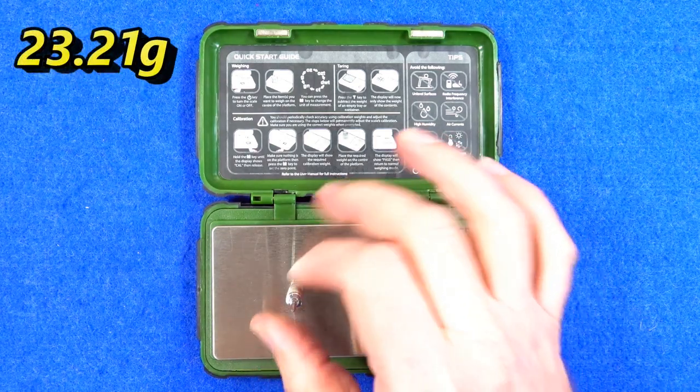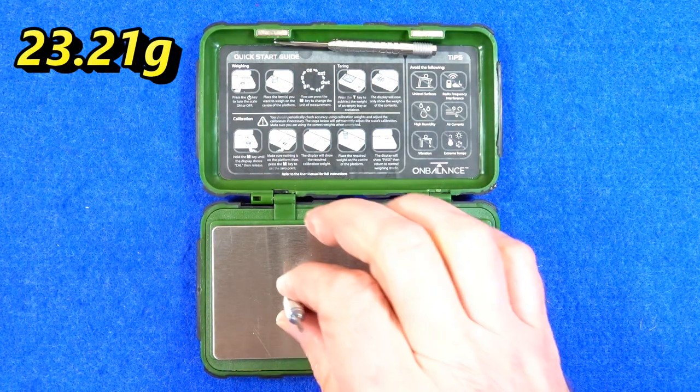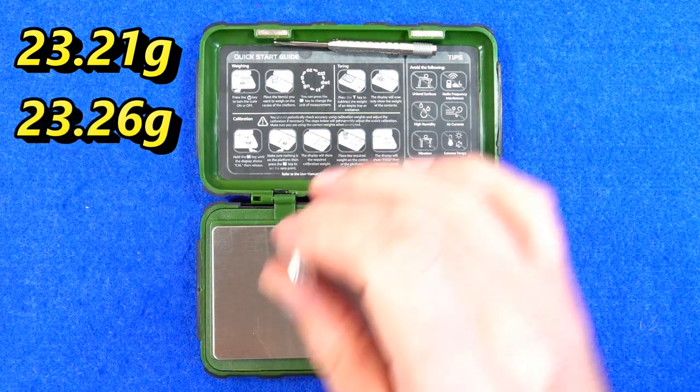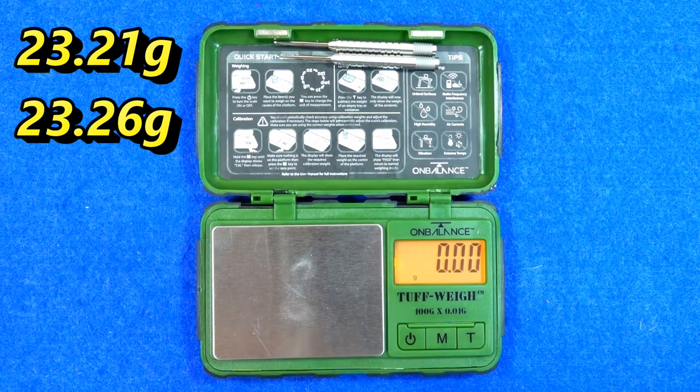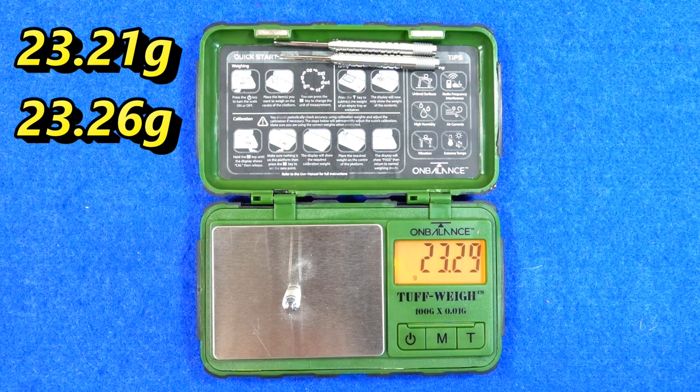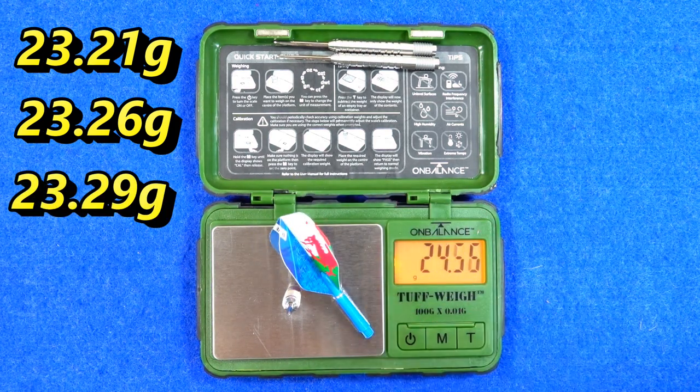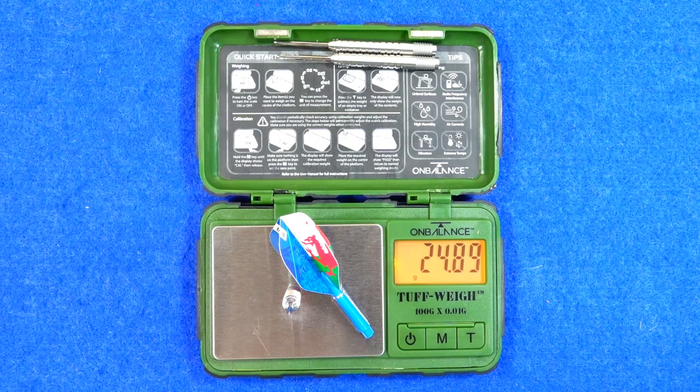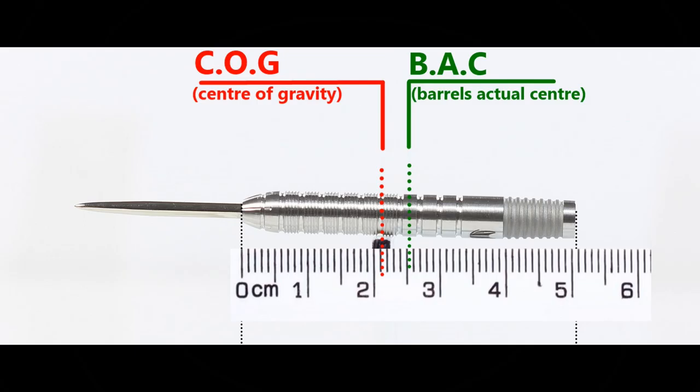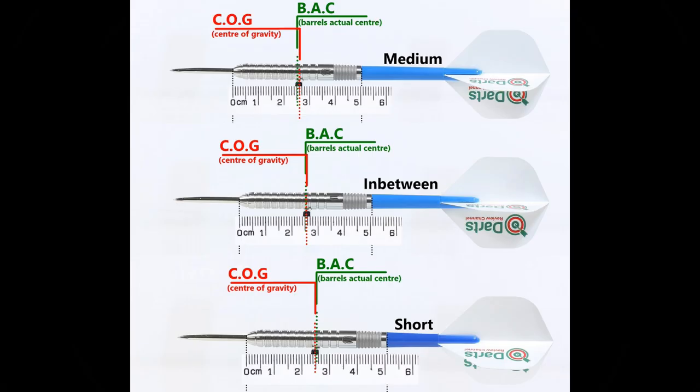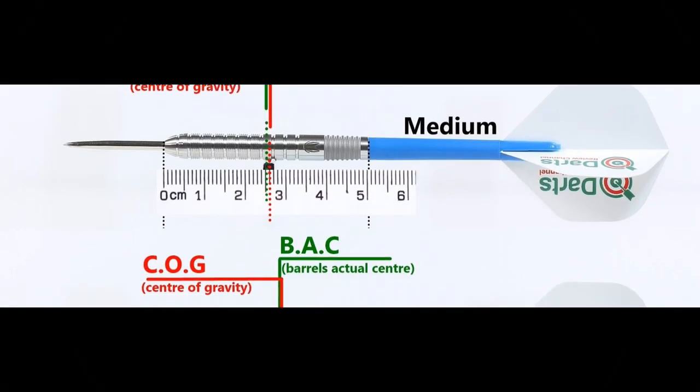23.21 grams, 23.26 grams, and 23.29 grams. Full setup 24.89 grams. Here's the balance with nothing attached and with the supplied setup and this is the balance with medium in between short nylon stems and standard flights.